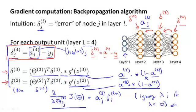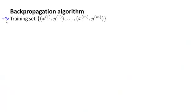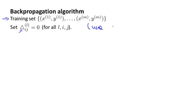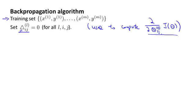Let's take everything and put it all together to talk about how to implement backpropagation to compute derivatives with respect to your parameters, for the case of when we have a large training set of m examples. The first thing we're going to do is set these capital delta l subscript ij — that triangle symbol is the capital Greek letter delta — set this equal to zero for all values of l, i, j. Eventually, this capital delta lij will be used to compute the partial derivative term, partial derivative with respect to theta lij of J of theta. These deltas are going to be used as accumulators that will slowly add things in order to compute these partial derivatives.